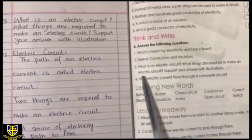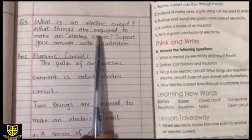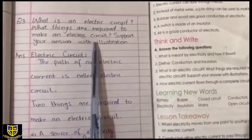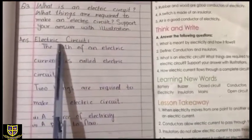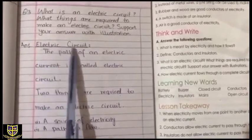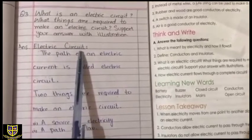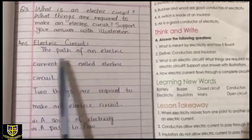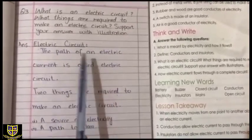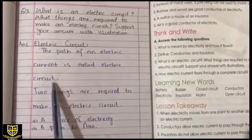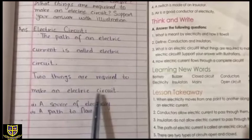What things are required to make an electric circuit? Support your answer with illustrations. You have to give a heading of Electric Circuit. Two things are required to make an electric circuit.